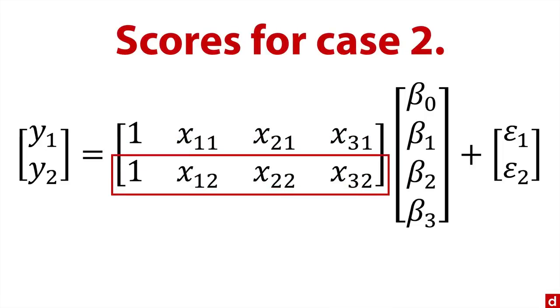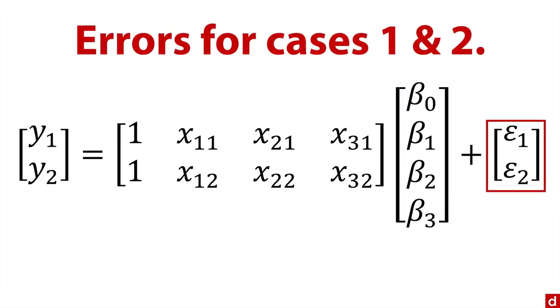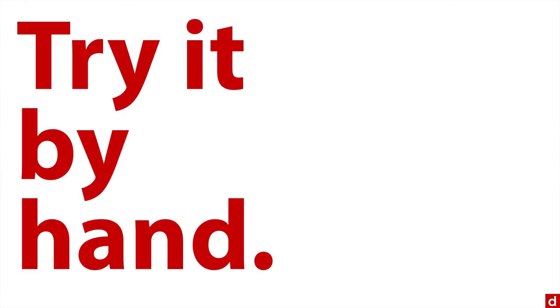And then over here in another vertical column are the regression coefficients. That's a beta there that we're using. And then finally, we've got a tiny little vector here at the end, which contains the error terms for cases one and two. Now, even though you would not do this by hand, it's kind of helpful to run through the procedure. So I'm going to show it to you by hand.